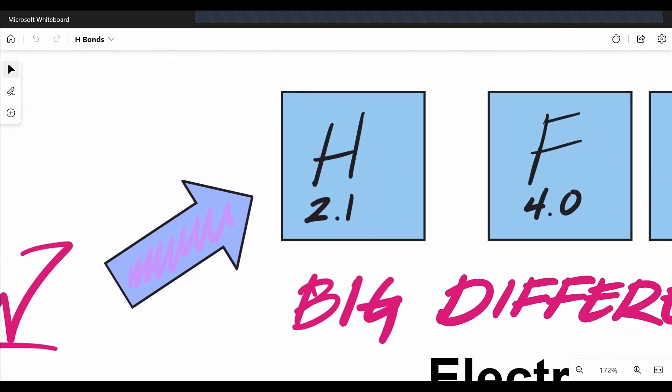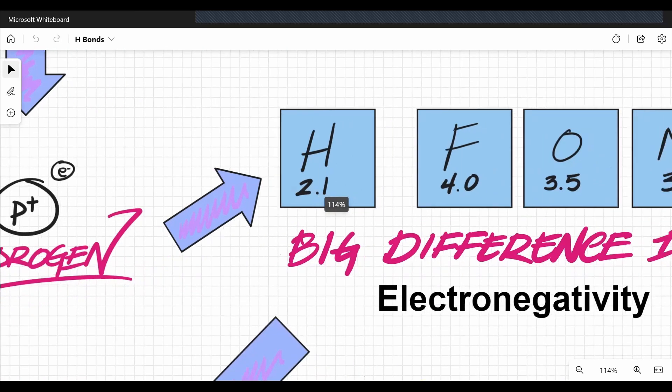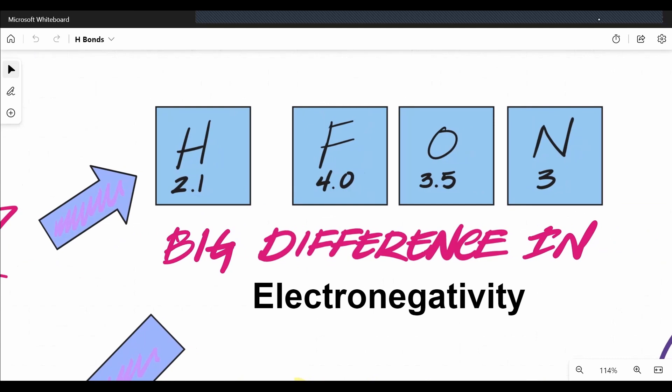Now over here, I'm going to show you a group of atoms and they are H, F, O, and N. These are the four key players in a hydrogen bond. And what you should notice is that F, O, and N have high electronegativities while hydrogen's is pretty low. So there's a big difference in electronegativity.